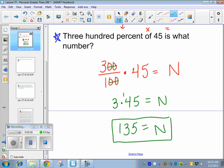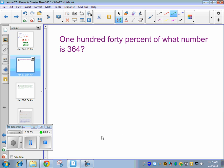So we get 135 is equal to N. So 300% of 45 is 135. So 3 times 45. All right. So go ahead and write down the sentence. 140% of what number is 364?